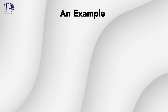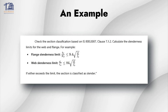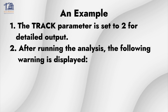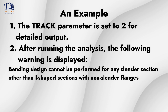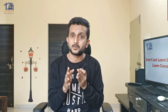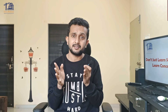Let's take an example. If we take any I-section from the steel table with a slender flange, the track parameter is set to 2 for detailed output. After running the analysis, the following warning is displayed: 'Bending design cannot be performed for any slender section other than eye-shaped sections with non-slender flanges.' In the member query dialog box, the bending capacity is reported as 0, meaning STAAD didn't check for bending. Always check the track output for such warnings, as they might not appear in the standard results.